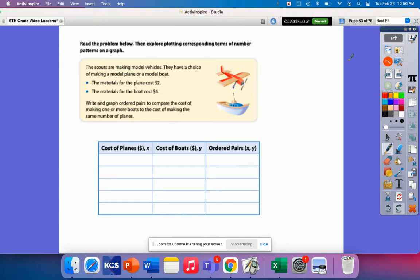The materials for the plane cost $2. The materials for the boat cost $4. Write and graph ordered pairs to compare the cost of making one or more boats to the cost of making the same number of planes. So for today's lesson, we're really going to focus on just comparing these patterns and how to create an ordered pair and what an ordered pair is. We're going to talk more about the graphing in our next video.